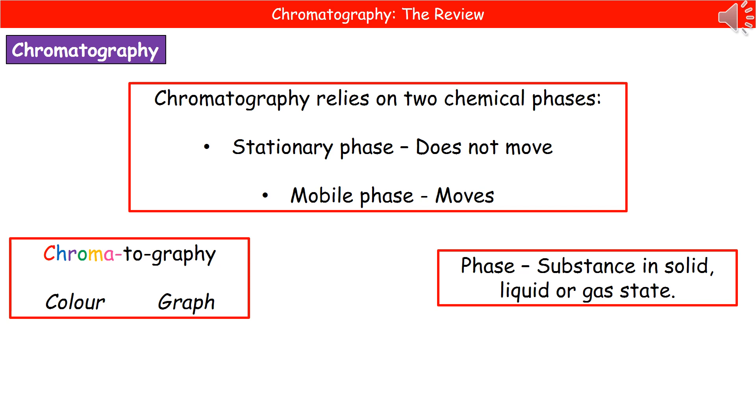Now chromatography is going to rely on two chemical phases. The first one, the stationary phase, as the name suggests, is the one that doesn't move. And then the mobile phase, again quite an obvious name there, it's the one that moves.